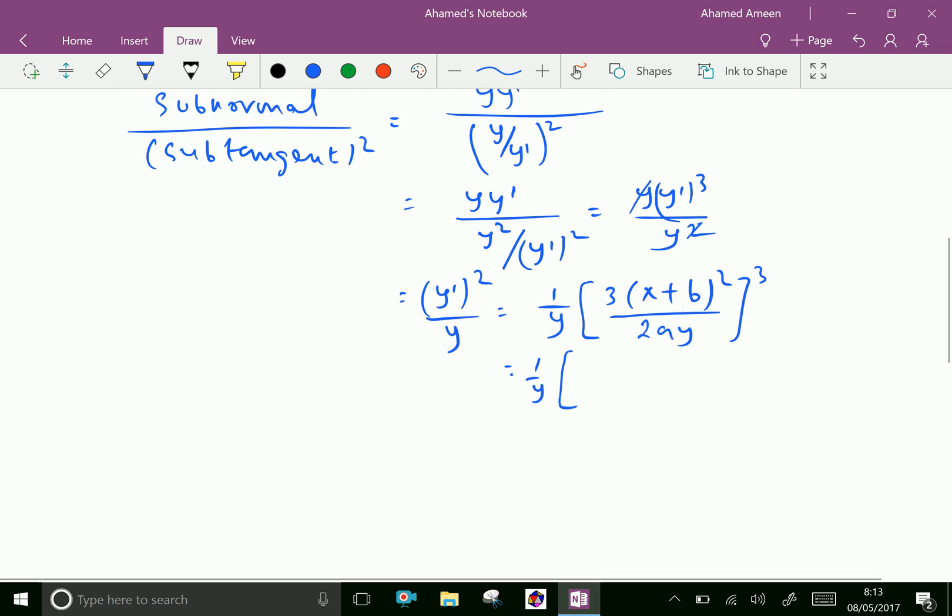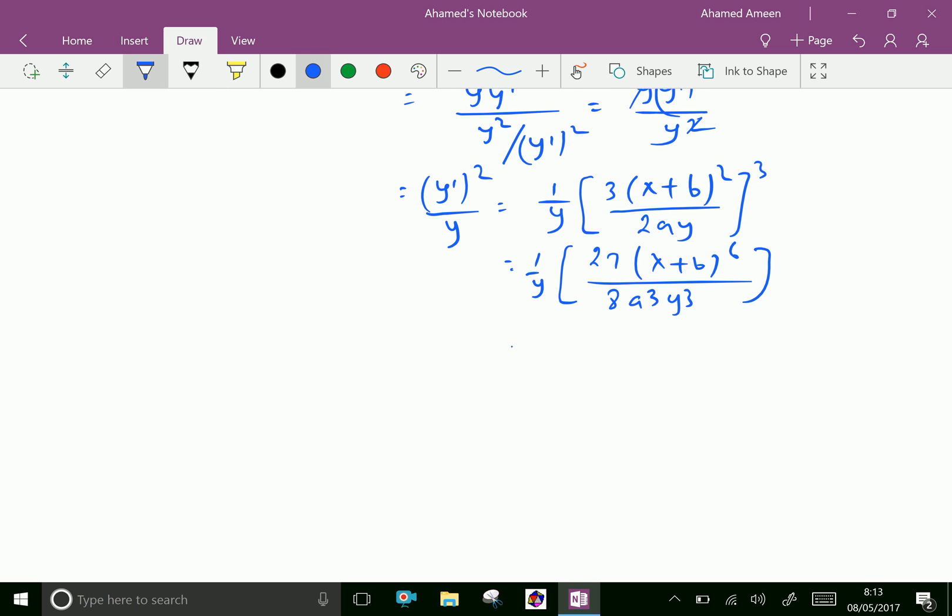This gives us 3³ = 27 times (x+b)⁶ over 2³ = 8 times a³y³. Which is further equal to 27(x+b)⁶/(8a³y⁴).